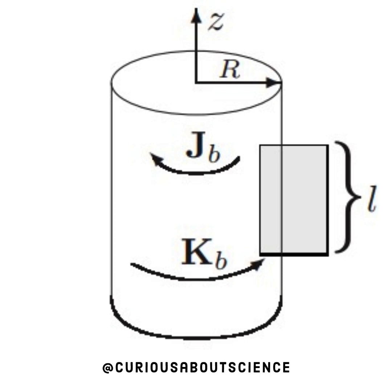Okay, but let's first dive into the diagram. We have a cylinder, JB running inside, KB running outside, an Amperian loop of length L, radius R, again all in the Z direction, orientated about the Z direction rather.